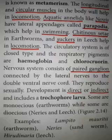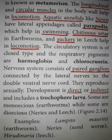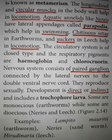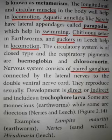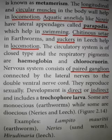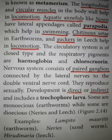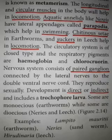The circulatory system is of closed type, meaning they have arteries and veins linked together by capillaries, with no mixing of oxygenated and deoxygenated blood. The respiratory pigments are hemoglobin and chlorocruorin — they have two respiratory pigments.